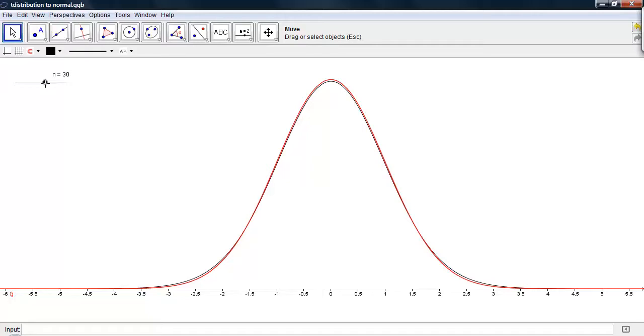But it is very close. And when you get beyond 40, we can see that there is very little difference between the t-distribution and the normal distribution.